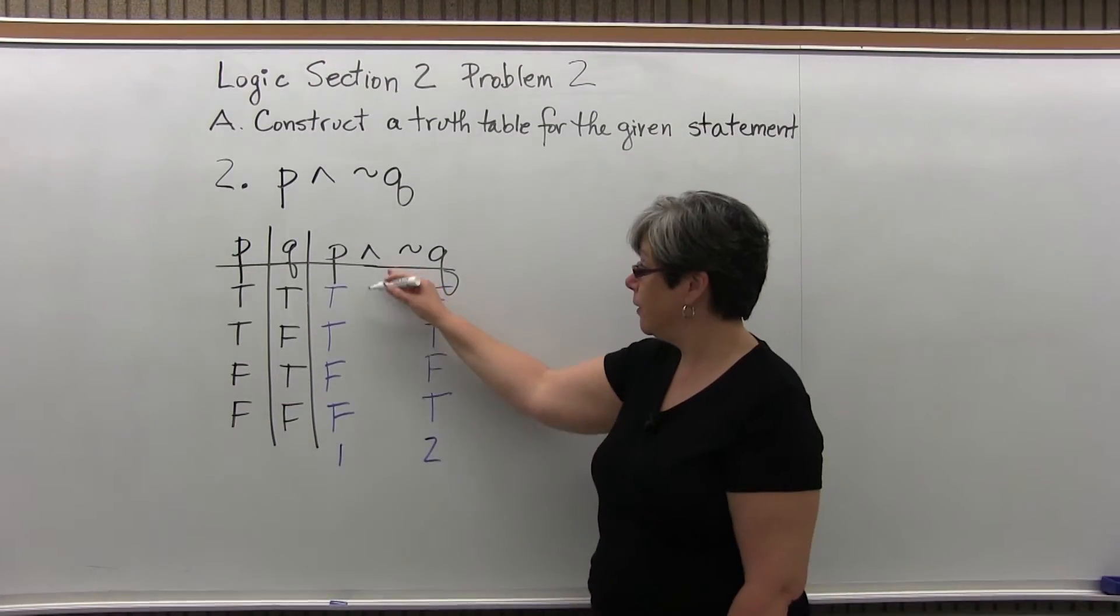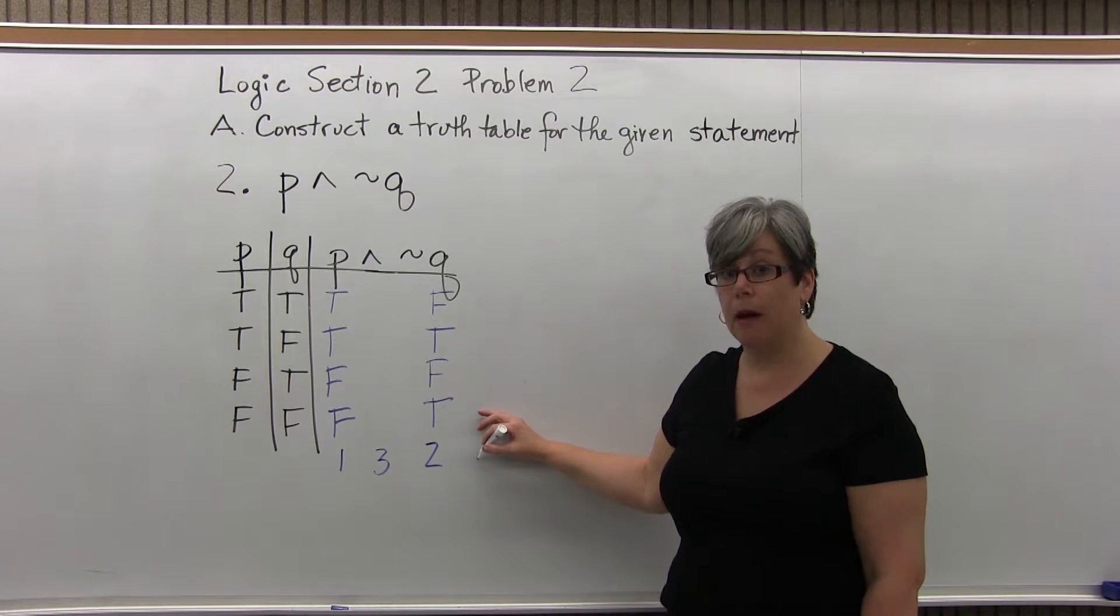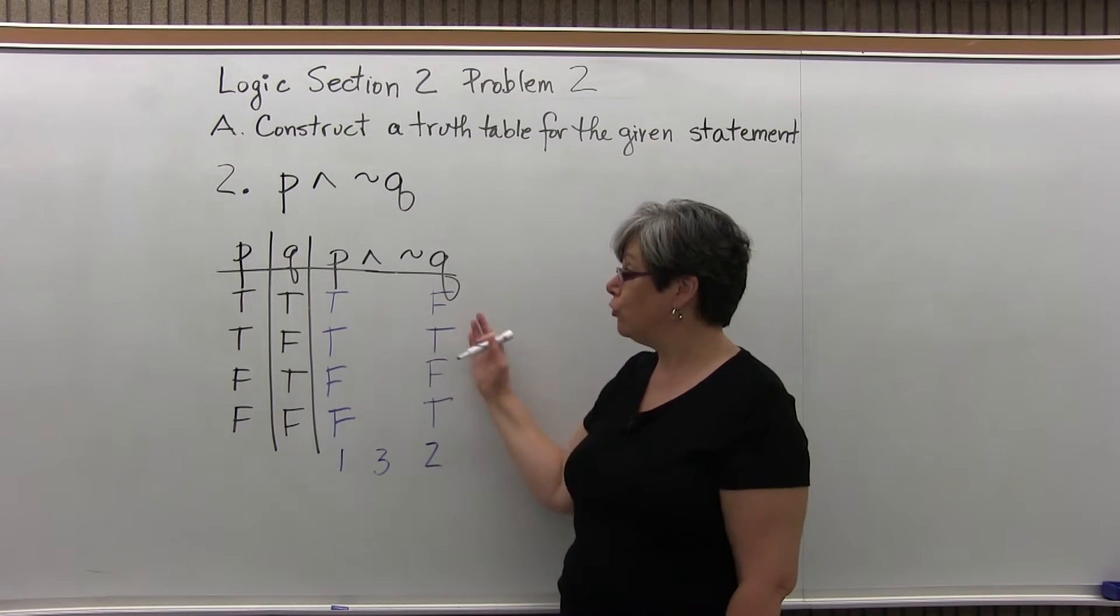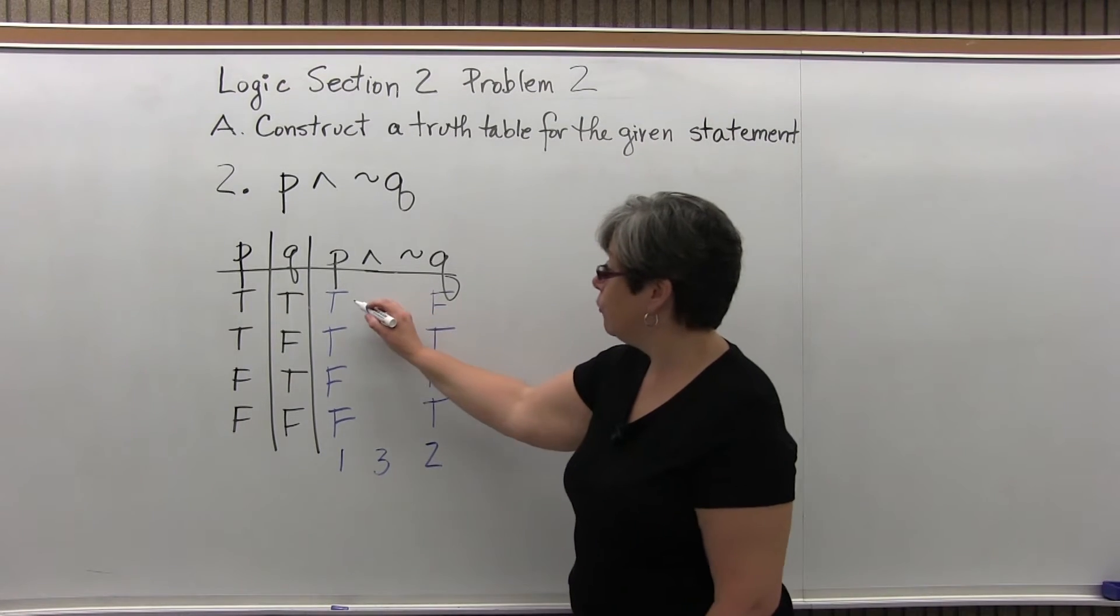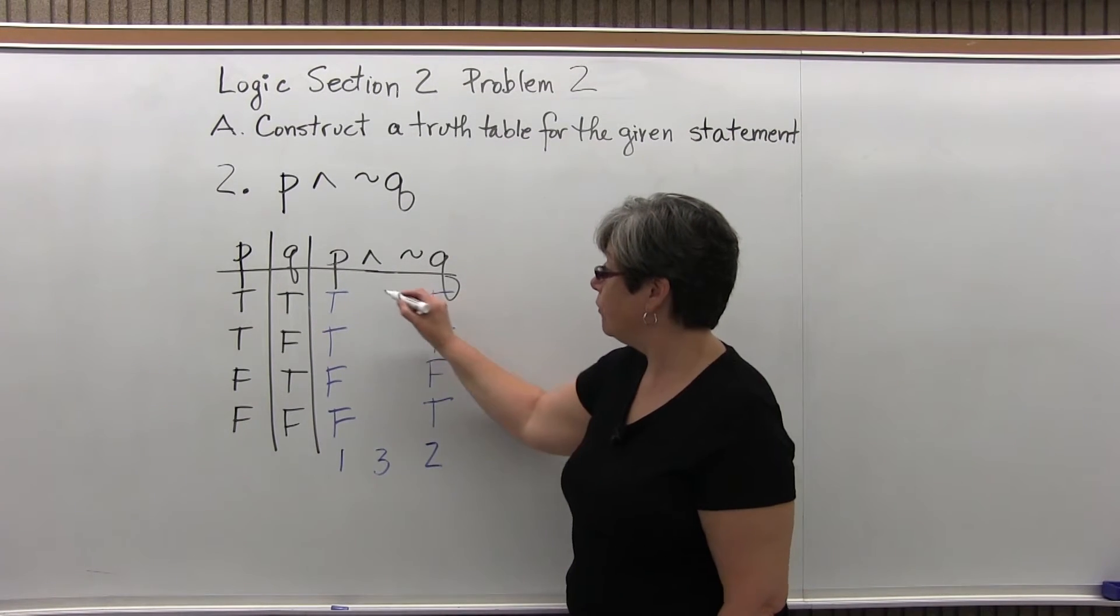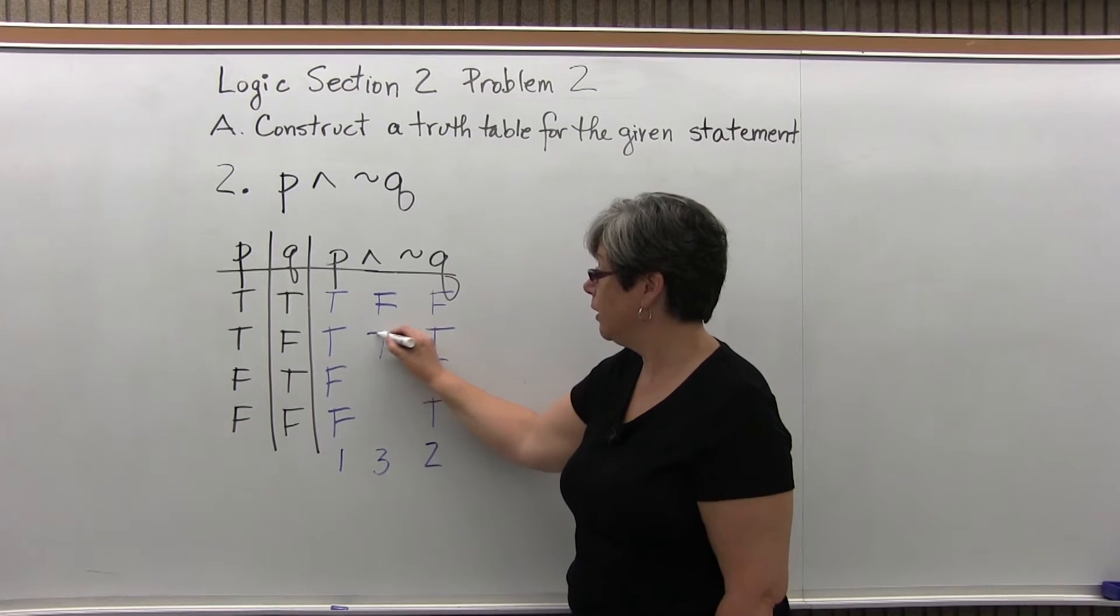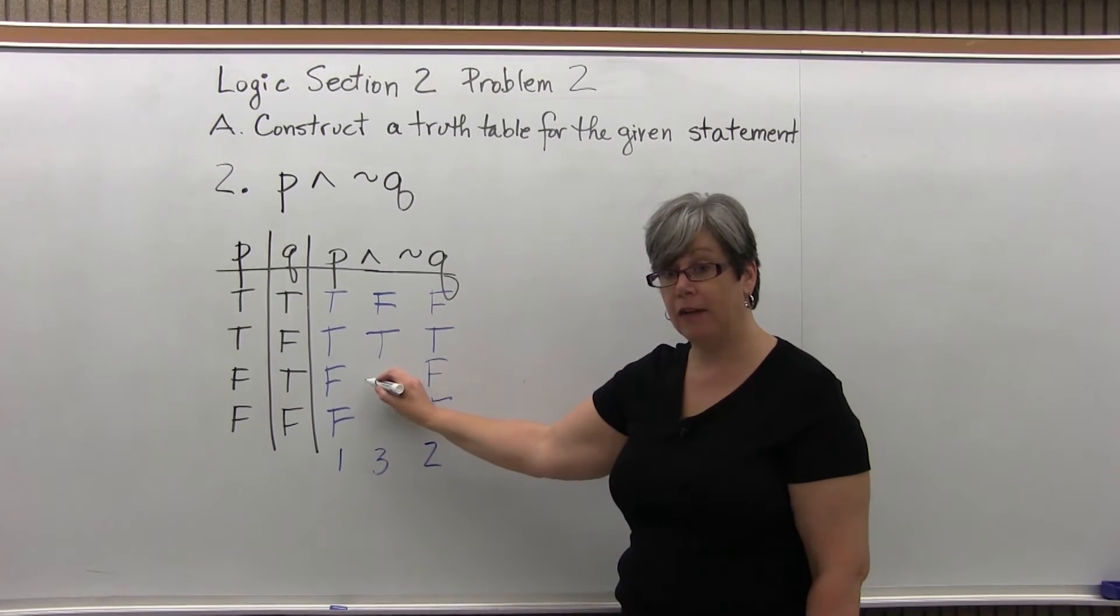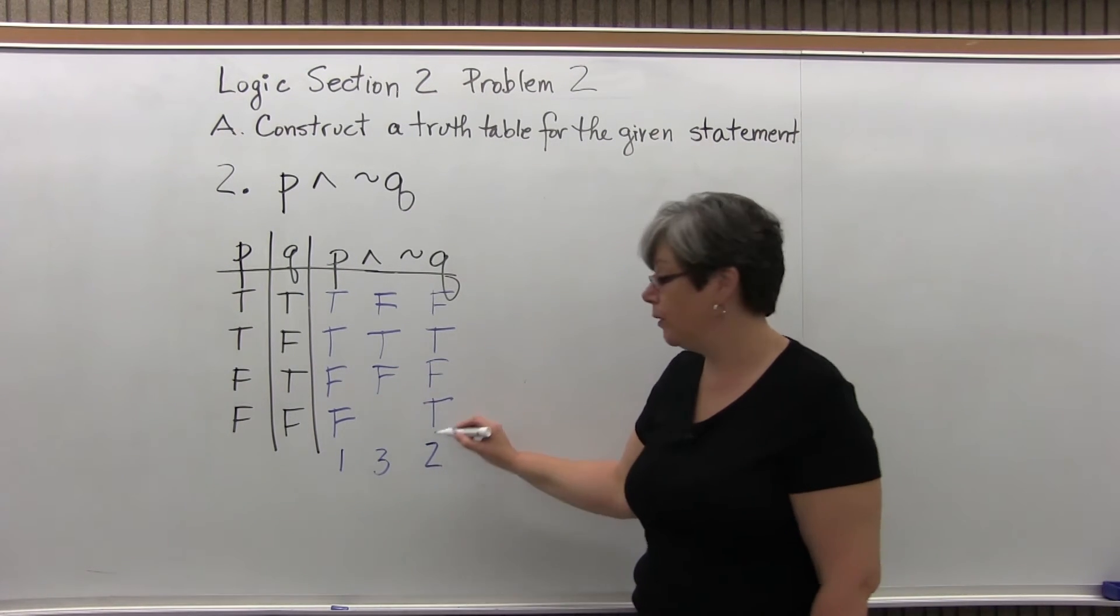Our third step is to do the operation of and, or conjunction, remembering that we need to have 2 trues in order for it to be true, otherwise it's false. With true and false, we will get a false. True and true, we get a true. False and false, we get a false. False and true, we get a false.